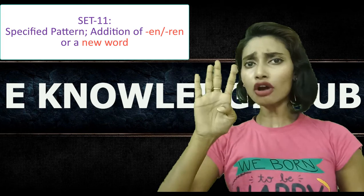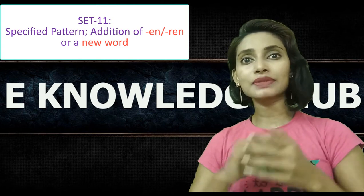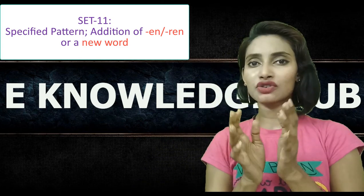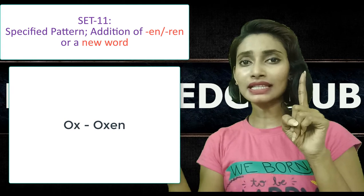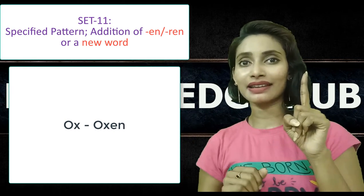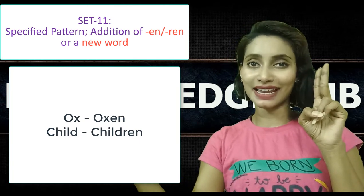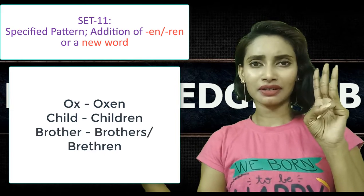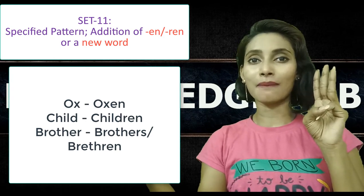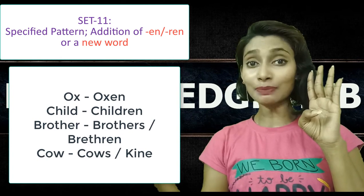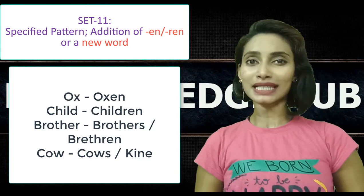Let's see set 11. There are four words which follow a specified pattern — sometimes they take EN or REN, and sometimes a new word in addition to the general S. The four words are: ox, plural oxen — it takes EN; child, plural children — added REN; brother, we know the plural brothers, and at the same time there is another plural form brethren; cow, plural cows, and another plural form kine. These are the four words in set 11.